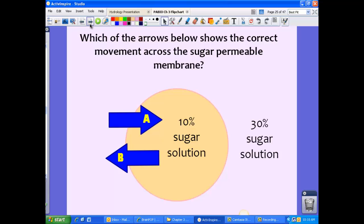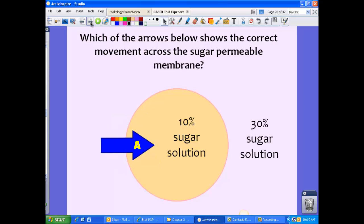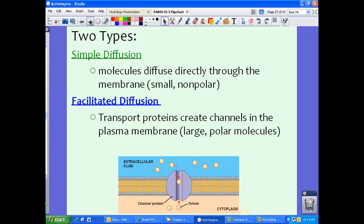Now taking a look at this one, which of the arrows below shows the correct movement across the sugar permeable membrane? We have 30% sugar solution outside. We have 10% sugar solution inside. Which way does the sugar want to move? Does it want to move inside the cell, which is A? Or does it want to move outside the cell, which is B? If you said A, you would be correct. Again, moving from high concentration to low concentration.